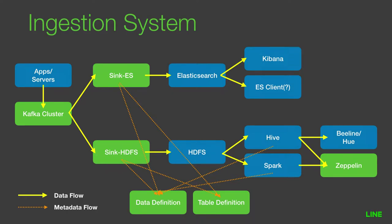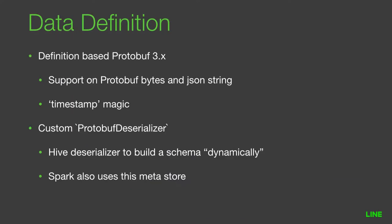We are still trying to automate the whole process. Our data ingestion begins by defining data using the data chain protocol, which is defined by the actual data producer — for example, server developers — not by us. This definition is based on Protocol Buffers 3 because it supports JSON strings, so we can support both protocol buffer bytes and JSON string. In cases where a service doesn't have protocol buffer support, they can use JSON string instead. For example, Node applications use JSON string to produce data to our cluster.